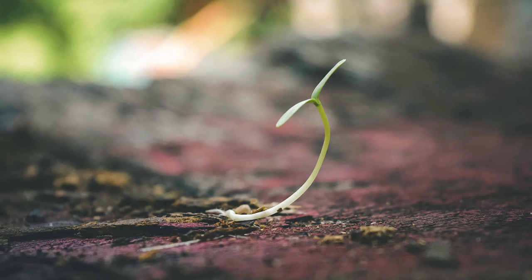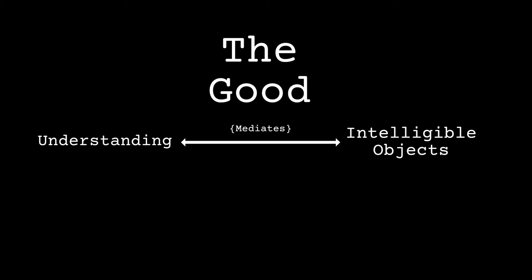Socrates then goes on to note that the sun not only allows us to see, but is also the source of earthly life, growth, and nourishment. Seeds grow into life-giving trees by the sun's power. Without it, the earth would be barren. Socrates then speculates that the form of the good, the parent of the sun, plays a similar role in the invisible world. It is the mediating third between the understanding and intelligible objects. For our minds perceive forms only through its intellectual light.